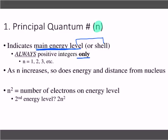You'll never have a negative or a fraction — it'll be all positive integers: one, two, three, and so on. As n increases, so does the energy and the distance from the nucleus.